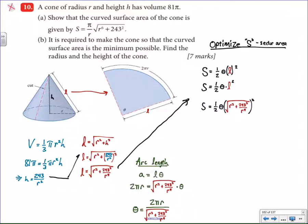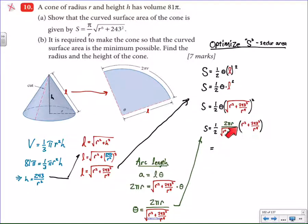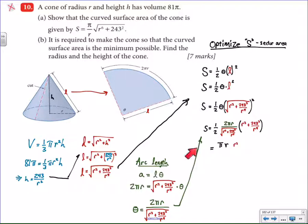If we just take that theta value and substitute it in here, then we see an equation with just r in it, and that's satisfactory. And then I see something even more that I like: here is r² + 243²/r⁴, and here is also r² + 243²/r⁴. This whole base is to the one-half power, and this whole base is to the one power. So I'm going to use my properties of exponents — subtract the exponents — the half and the twos divide out, so we're left with just πr.